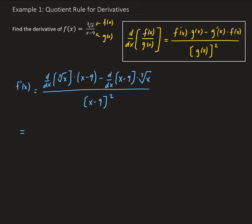So the derivative of the cube root of x — recall that the cube root of x is equal to x to the one-third. So when we take the derivative of that, we're going to get one-third times x to the power of one-third minus one, which leaves us with x to the negative one-third. We can write that as x to the one-third.